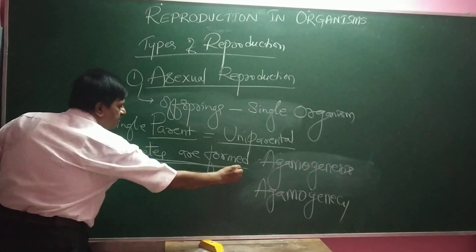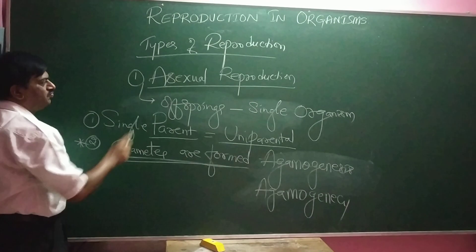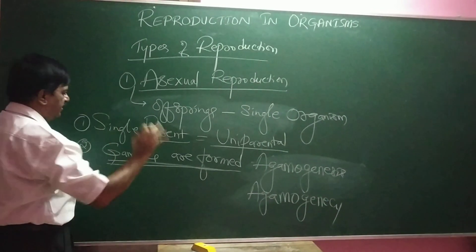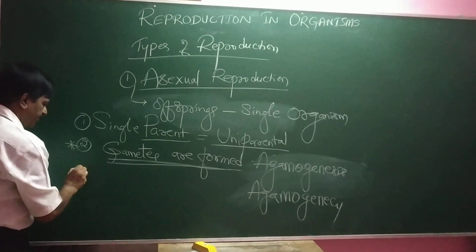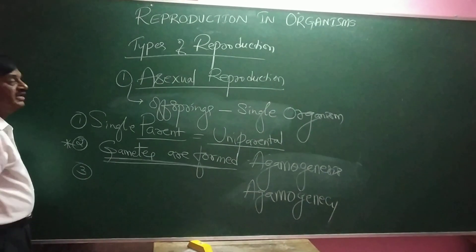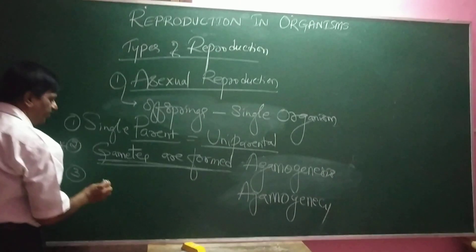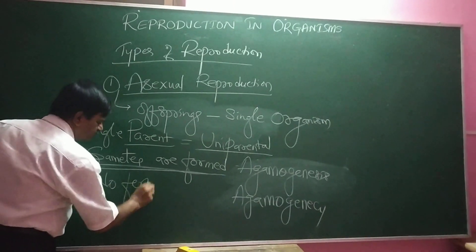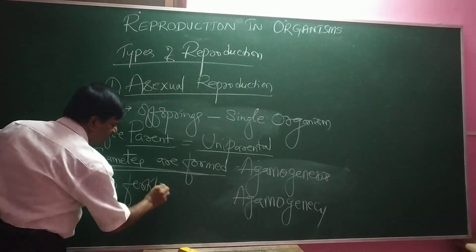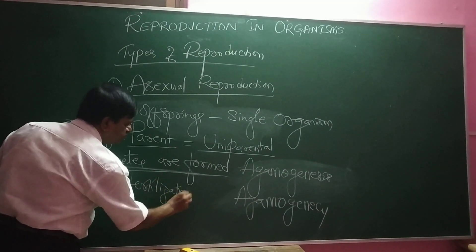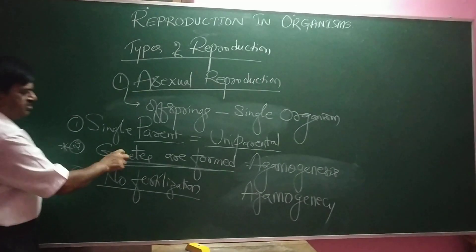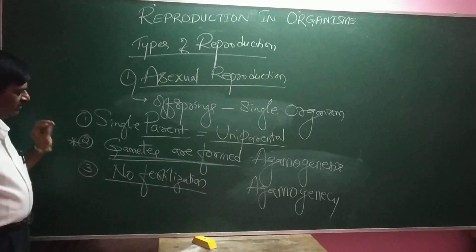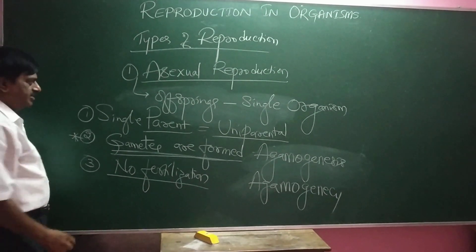The meaning of agametogenesis: the gametes are not formed during asexual reproduction. Next, in this reproduction there is no fertilization — fertilization is totally absent. When there are no gametes, automatically no fertilization takes place.